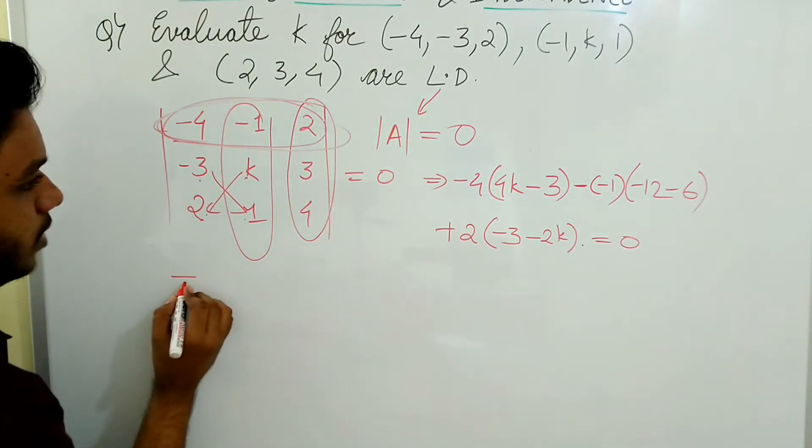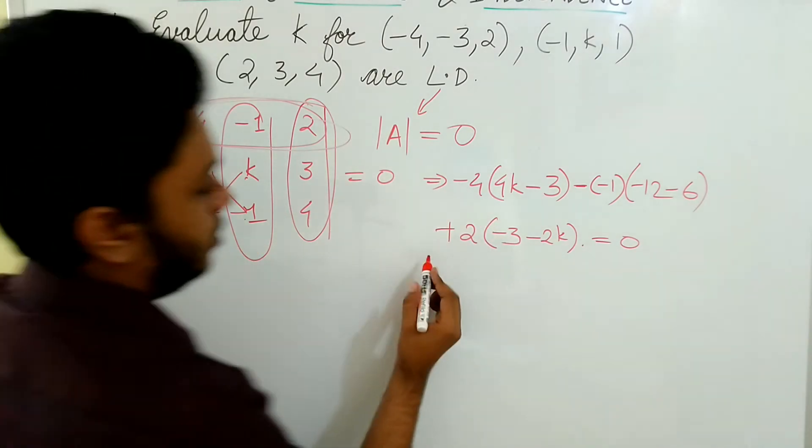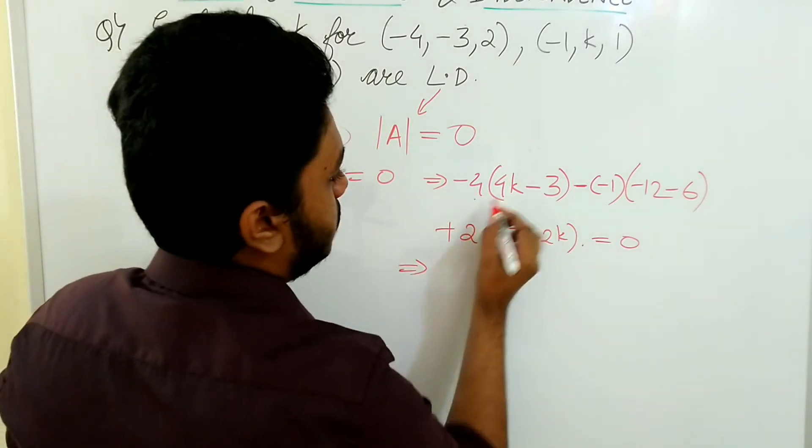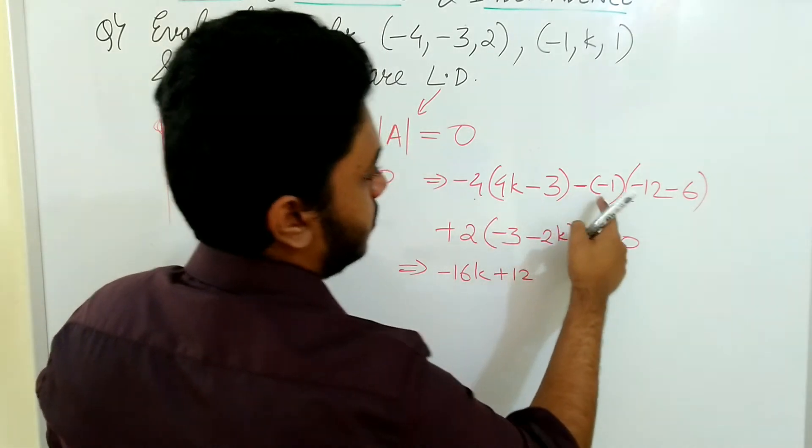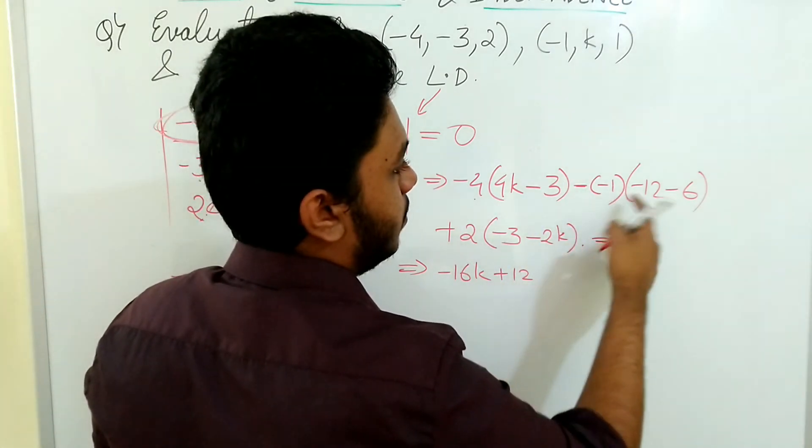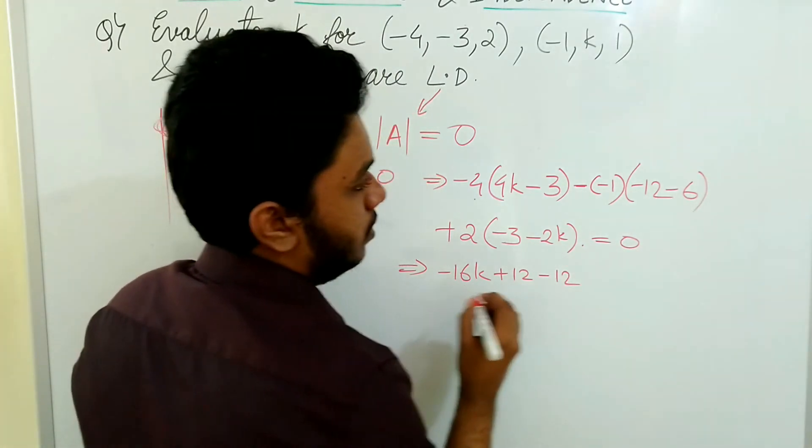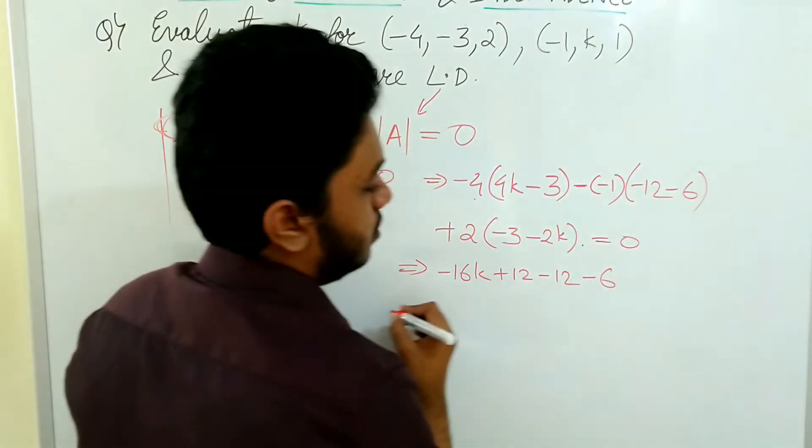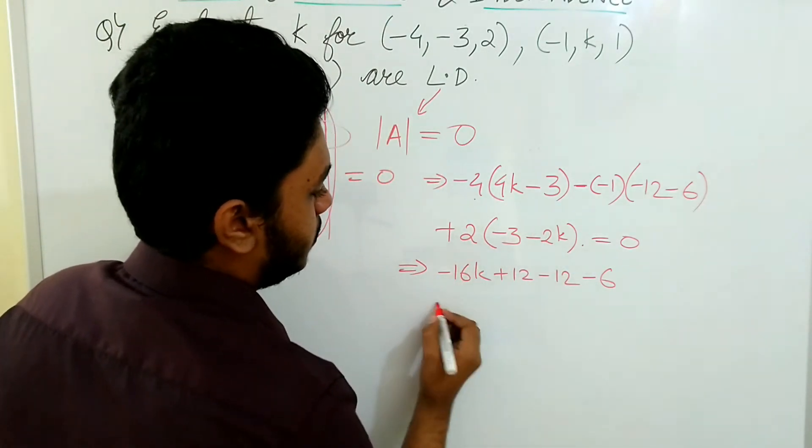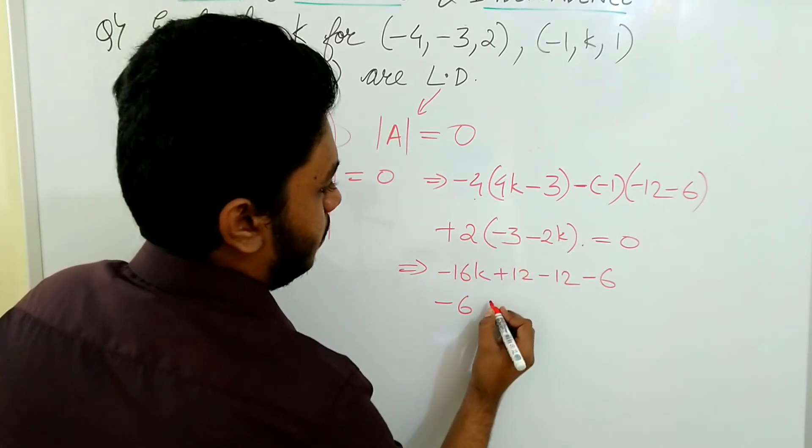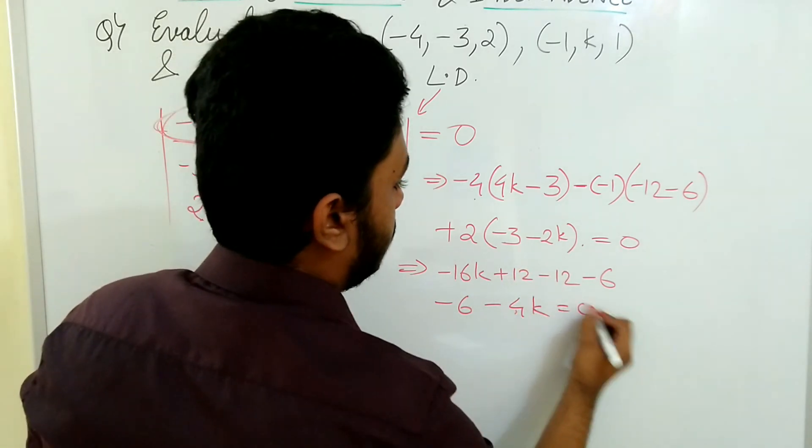Now I will just expand it. I will do it here itself: -16k plus 12. Minus of minus 1, this is plus 1, into -12 minus 6. Minus 4k. This is equal to 0.